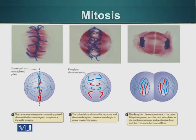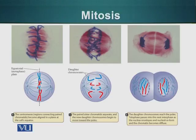In the next stage, telophase, the nuclear envelope starts to form. Our chromosomes have already moved to the opposite ends of the cell. In telophase, the nuclear envelope starts to reform. Chromosomes start to decondense and they get ready for the next phase, which is cytokinesis. Now we have two nuclei in the same cell having exactly identical chromosomes, and the next event is the splitting of one cell into two cells.